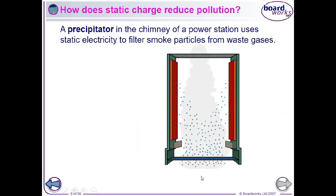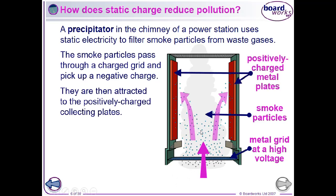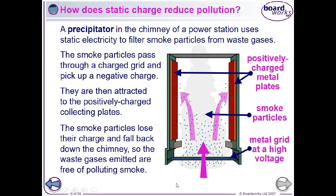In power stations and factories that burn fossil fuels and produce smoke, we use a precipitator to get rid of particles in the smoke. Smoke particles pass up the chimney and through a grid at high voltage, where they pick up a negative charge. We then have two positive metal plates on each side of the chimney, so the negatively charged smoke particles are attracted to the positively charged plates. Every now and again these plates are shaken or banged by a hammer so that the smoke particles clumped on the plate fall down to collecting bins and can be disposed of. This produces smoke without polluting particles.